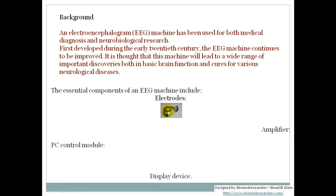The essential components of an EEG machine are: the electrodes, which pick up the signal from the scalp; the amplifier, which amplifies the signal; the PC control module; and finally the display device, where the signal is shown in a readable format for doctors to read and report.